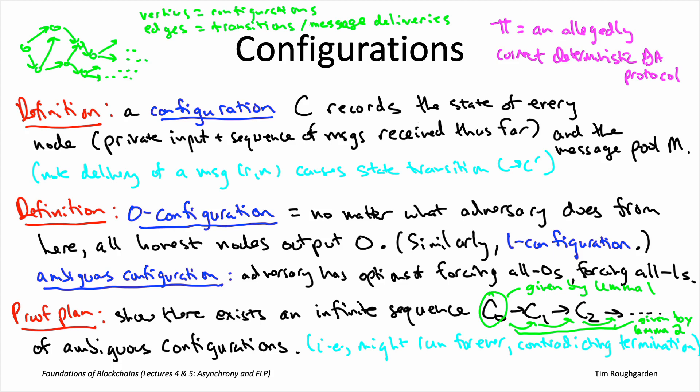Lemma two then is going to show how to exhibit one new ambiguous configuration from an old one. So you can apply lemma two once to get C1 from C0, then apply it again to get C2 from C1, and so on. So by applying lemma two over and over again, that's going to allow you to generate an arbitrarily long sequence of ambiguous configurations. So neither of these lemmas is at all obvious. We'll start with lemma one, which is a little bit easier. We'll do that in the next video, to wrap up lecture four. Lemma two is a bit tricky, so that's what we're going to focus on in lecture five. But next, the formal statement of lemma one and its proof. That'll be in the next video and I'll see you there.